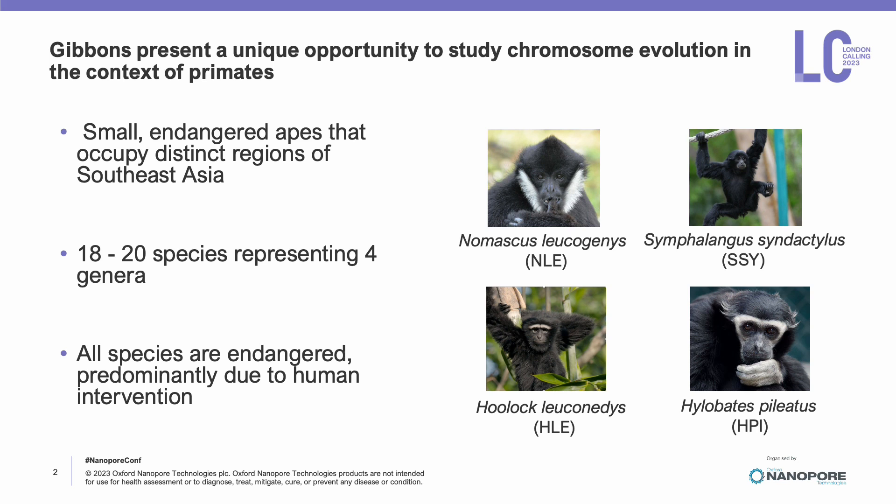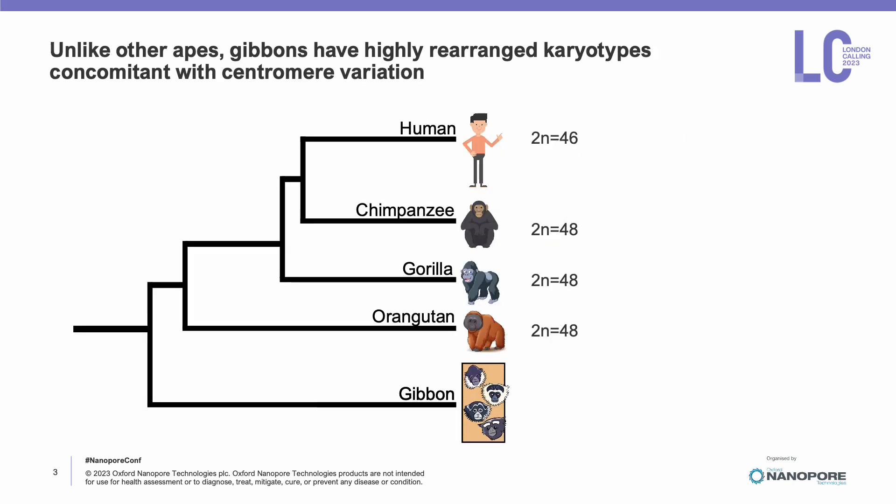In particular, my work focuses on the eastern hoolock gibbon, shortened to HLE, and the pileated gibbon, shortened to HPI. Unlike other great apes, gibbons have highly rearranged karyotypes and a high degree of centromere variation. If we look across the phylogeny of great apes, chromosome numbers have remained relatively stable, with just a slight variation from 2n equals 48 to 2n equals 46.